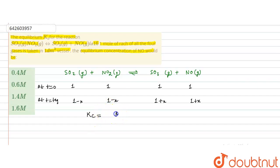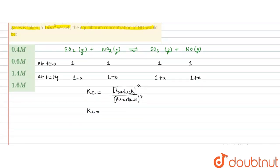The equilibrium constant Kc is written as the concentration of the products raised to the power of their stoichiometric coefficients, divided by the concentration of the reactants raised to the power of their stoichiometric coefficients. For this reaction, Kc = [SO3][NO] / [SO2][NO2].